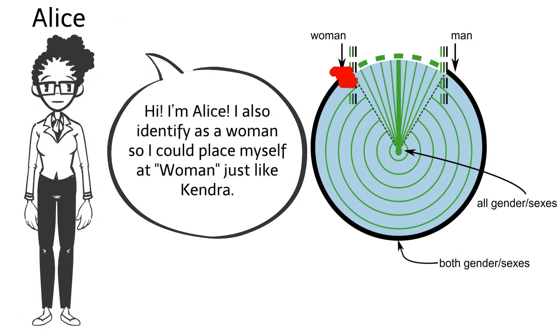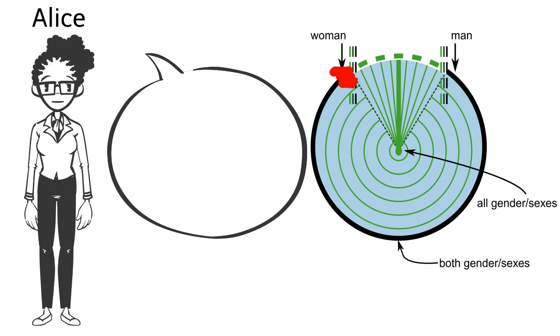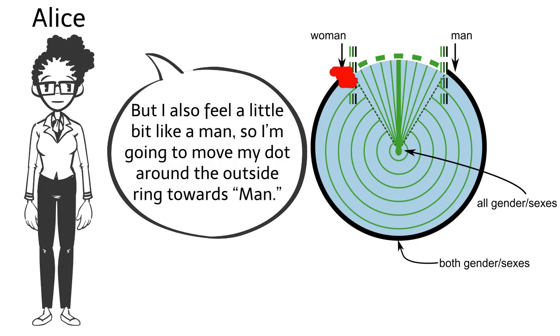Hi, I'm Alice. I also identify as a woman, so I could place myself at woman, just like Kendra. But I also feel a little bit like a man, so I'm going to move my dot around the outside ring towards man.